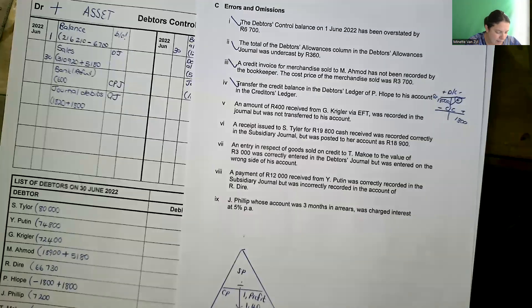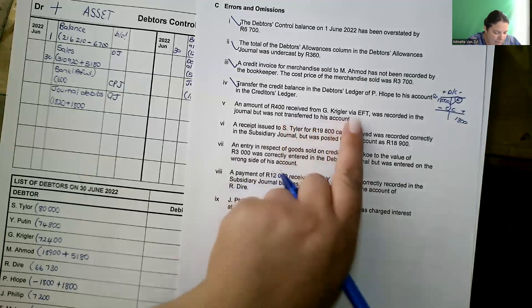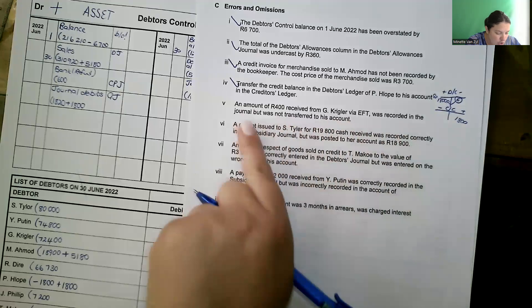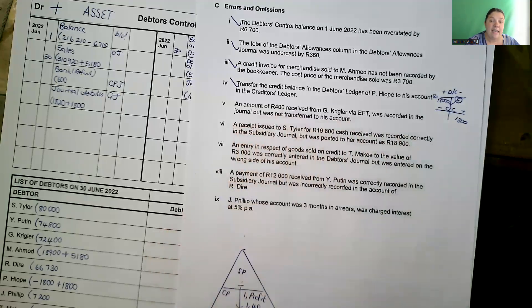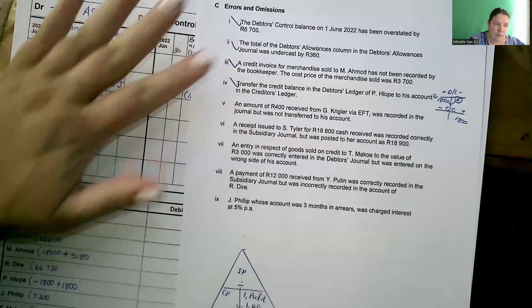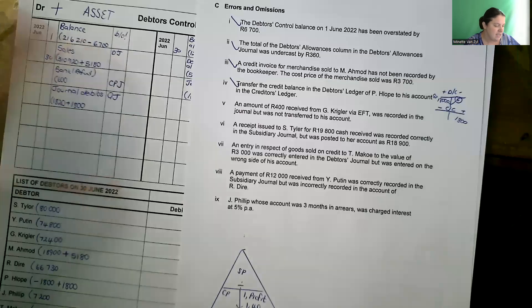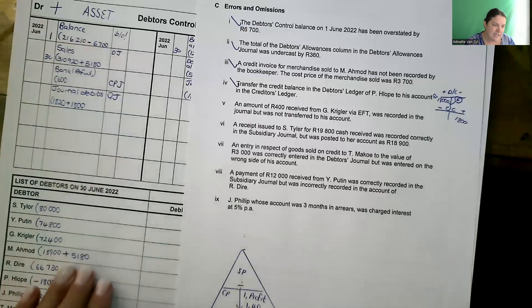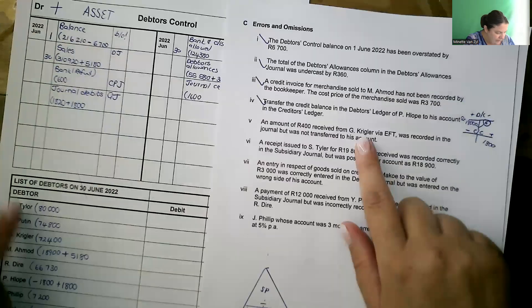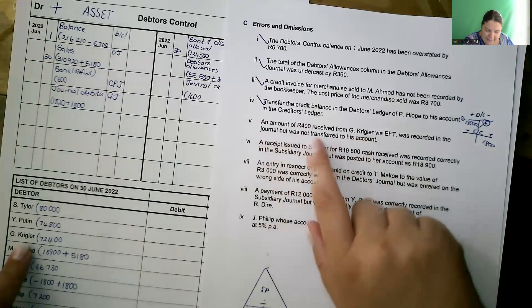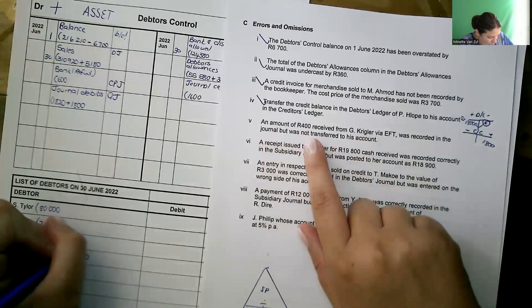Number five, an amount of 400 received from Krigel via EFT was recorded in the journal, but not transferred to his account. If your journal is correct, the debtors control account is correct. So we need to fix it in the list. So our debtor is Krigel, an amount received so he paid us. So his account has to minus 400.